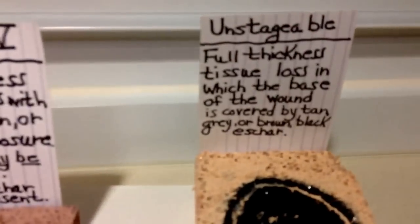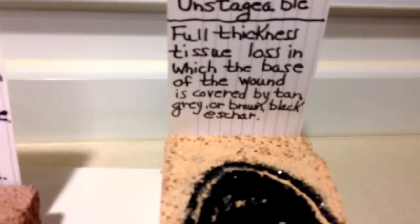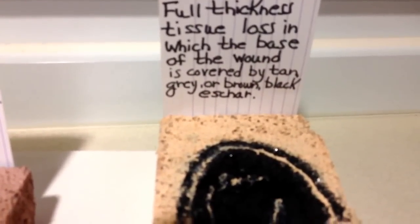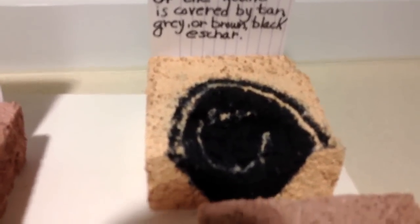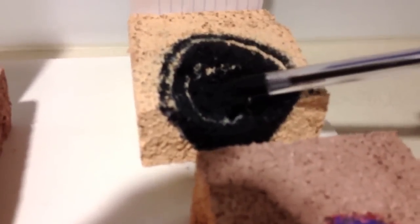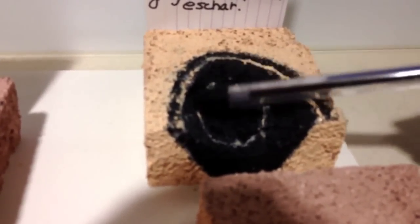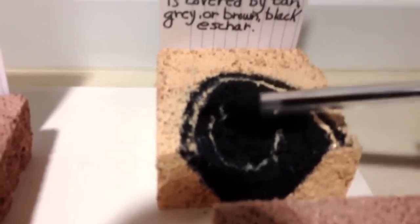We also have unstageable wounds, which are basically a full thickness tissue loss in which the base of the wound is covered by a tan, gray, brown, or black eschar. This is representing a black eschar — that is not a stageable wound. A black eschar forming right over the wound is known as an unstageable wound.